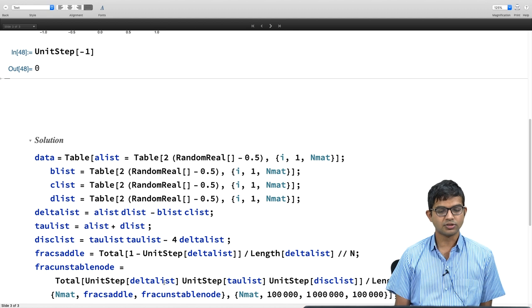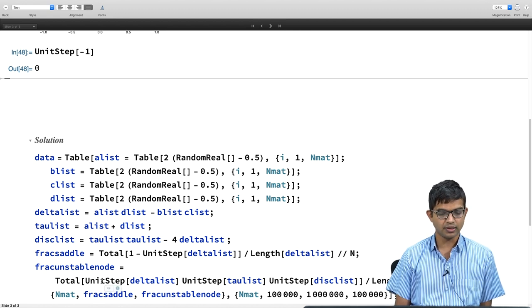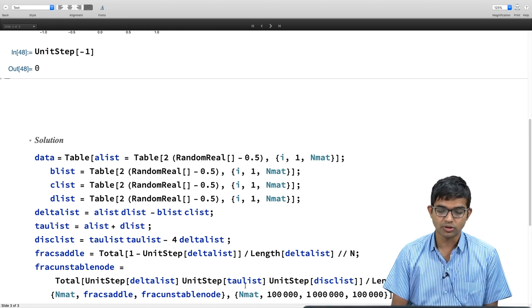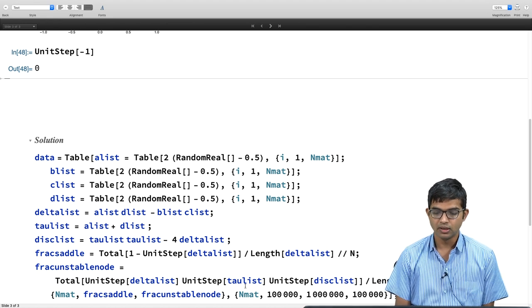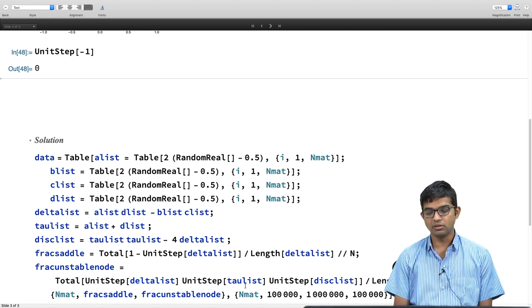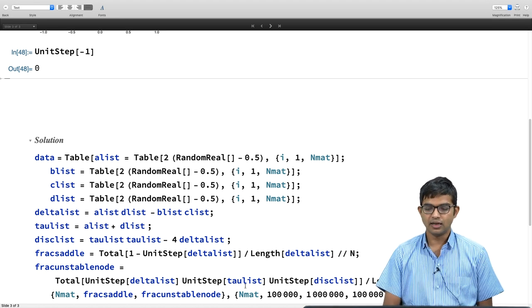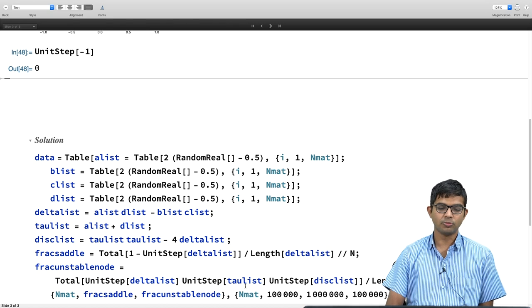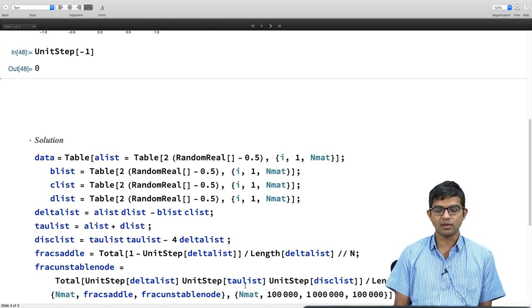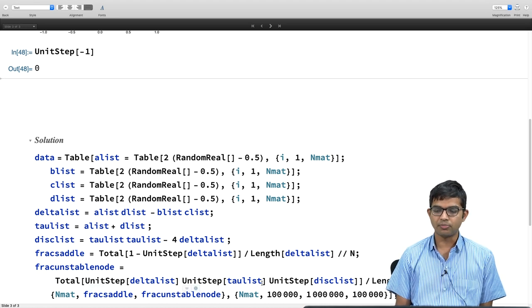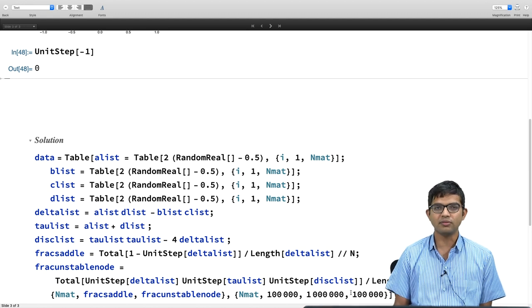Likewise, I can do fraction of unstable node. What all conditions must hold? I must have delta list should be, delta should be positive. So I take unit step of delta. Then it should also simultaneously give me, I should also simultaneously have tau to be positive. So I take the product with tau and then tau list, unit step of disk list. I must also have discriminant to be positive. All 3 conditions when they are simultaneously met, then the simple way to count all of this is to just take the product of these 3. And then I just total all of them up, done. Very simple.